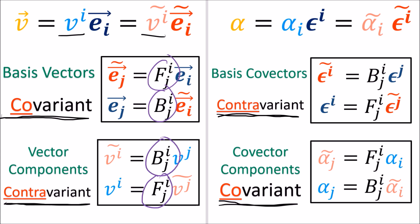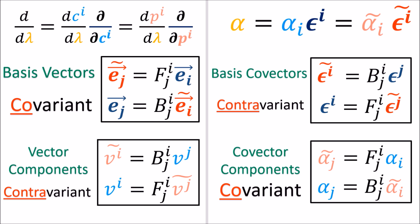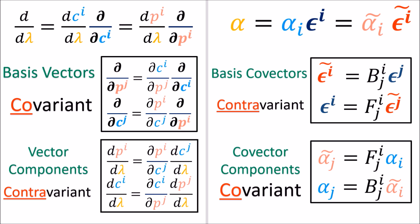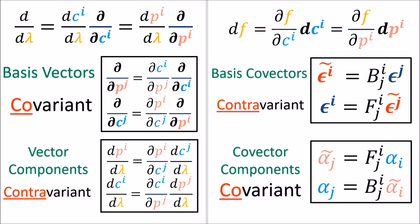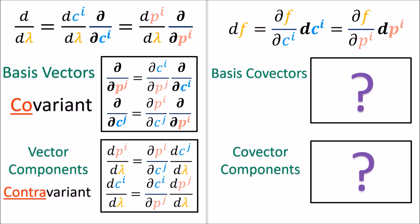In this tensor calculus series, we've been rediscovering all these concepts in the context of calculus. Instead of expanding individual vectors, we expand tangent vector fields along curves into linear combinations of vector fields using the chain rule, where the partial derivative operators are the basis vectors. We also discovered that basis vectors obey the covariant transformation rule and vector components obey the contravariant rule. In the previous video, we discussed how co-vector fields, or differential forms, can be written as linear combinations of basis co-vector fields. The remaining questions are: how do the basis co-vector fields transform, and how do the co-vector field components transform? That's what I'll be discussing in this video.